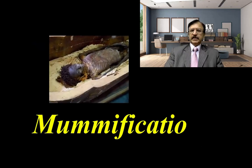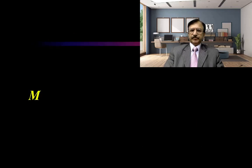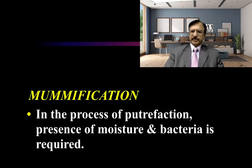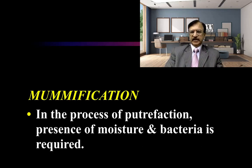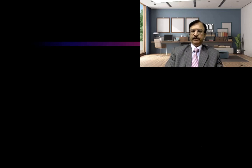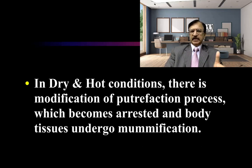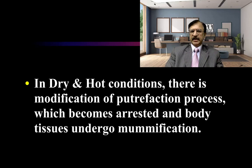Starting with mummification. Mummification is a modification of putrefaction. We know that for putrefaction, moisture and bacteria are necessary elements. Whereas in dry and hot conditions, there is modification of the putrefaction process — the putrefaction becomes arrested and the body tissue goes into a mummified state through mummification.